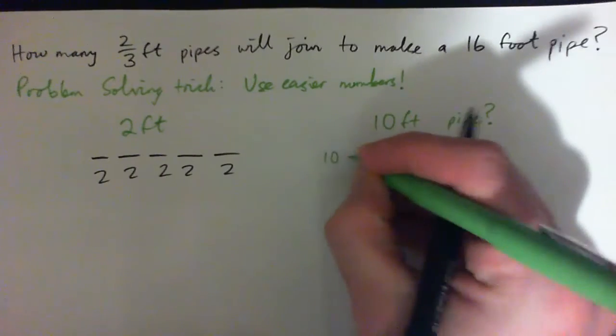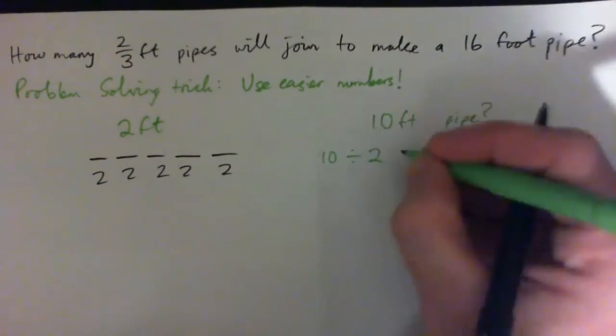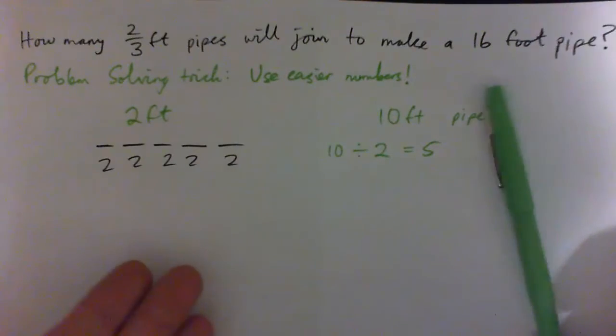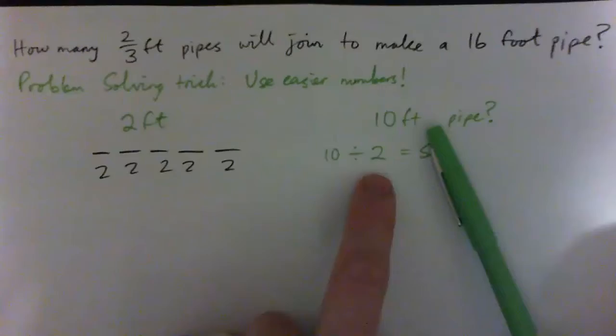Well, we go 10 divided by 2, right? That would give us five. So we've made up our simple example. We take this number, we divide it by this number, we get the answer.